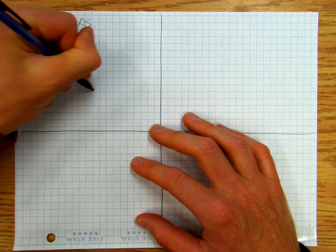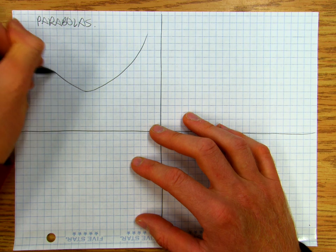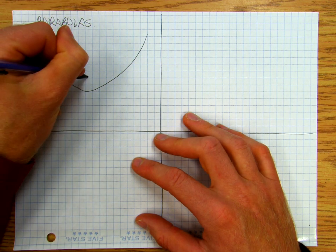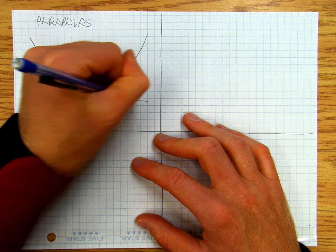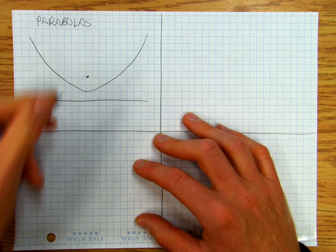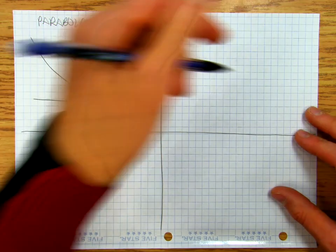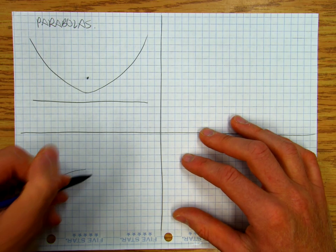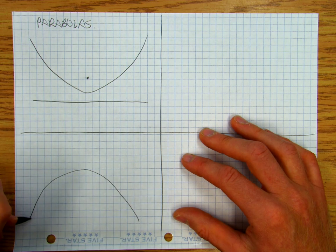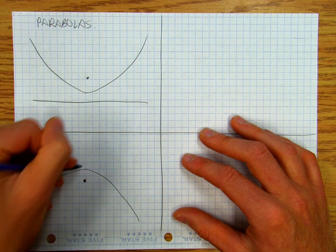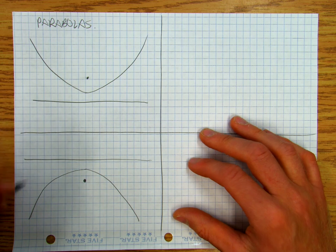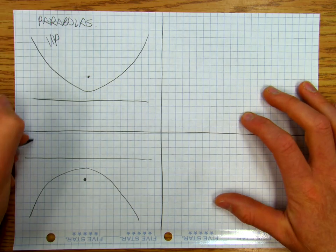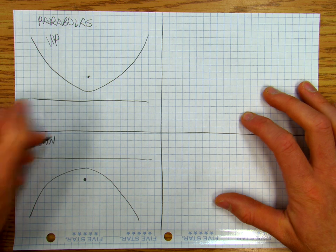First off we're going to have parabolas that open up, that have like a focus there and a directrix there. And then we're going to have parabolas that open down, that have a focus there and a directrix there. So up, down.